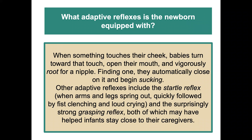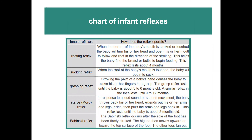What are some of the adaptive reflexes that the newborn is equipped with? When something touches a newborn's cheek, babies turn toward that touch, open their mouth, and vigorously root for a nipple. Finding one, they automatically close on it and begin sucking. Other adaptive reflexes include the startle reflex — when arms and legs spring out, quickly followed by fist clenching and loud crying — and the surprisingly strong grasping reflex of a newborn. Both of these may have helped infants, from an evolutionarily adaptive standpoint, to stay close to their caregivers. Here is a chart showing the rooting, sucking, grasping, startle or Moro reflex, and the Babinski reflex.